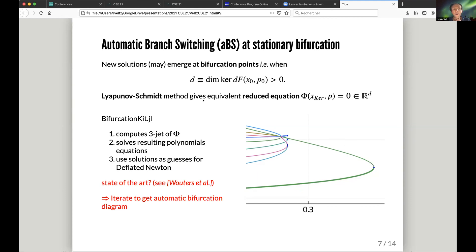Once we have this bifurcation point, we can compute an equivalent equation which is called the reduced equation with no approximation, and this reduced equation is d-dimensional, the dimension of the kernel, so it's a tremendous reduction in the number of unknowns. What we do in BifurcationKit.jl is we compute a third-order approximation of phi, and then we solve the resulting polynomials using a low-dimensional deflated Newton, and then we use those solutions as guesses for the original equation, the large-dimensional one.